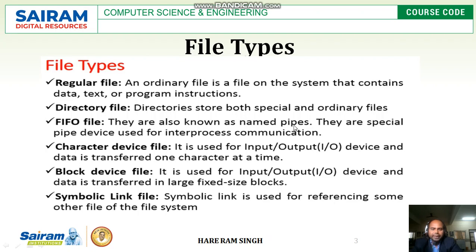Next is the FIFO file, also known as a named pipe. They are special pipe devices used for inter-process communication. A FIFO file gets input from one process and provides output to another process. The output of the first process will be provided by the FIFO to the input of another process.